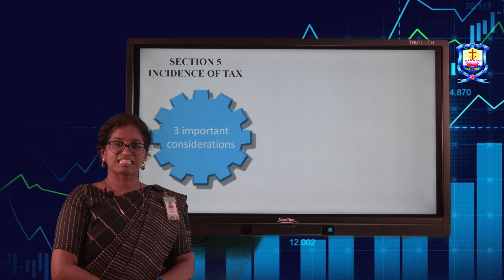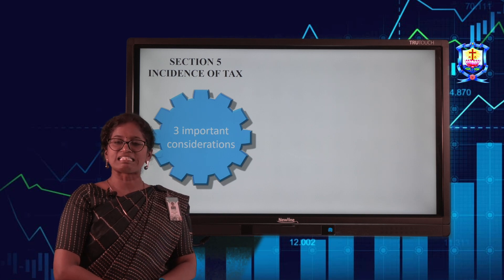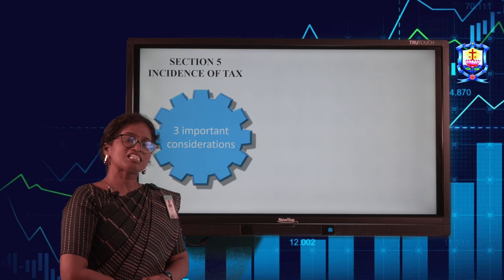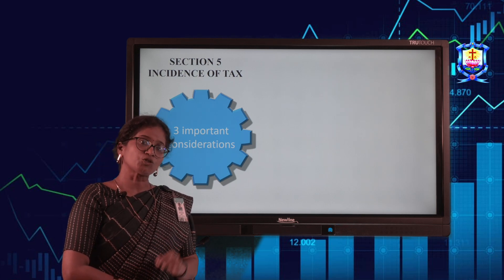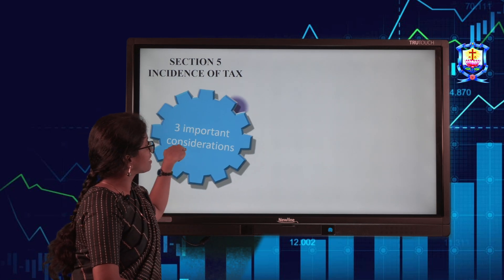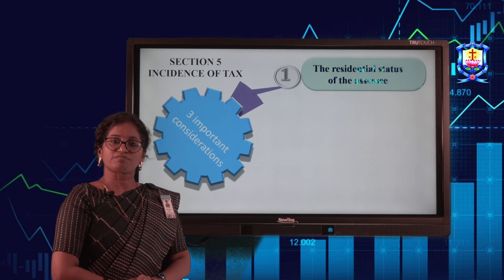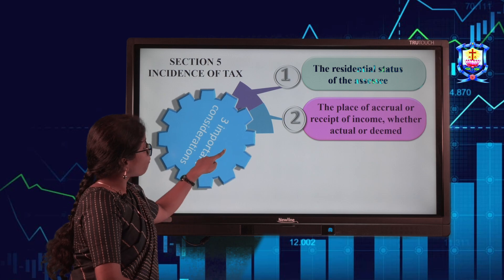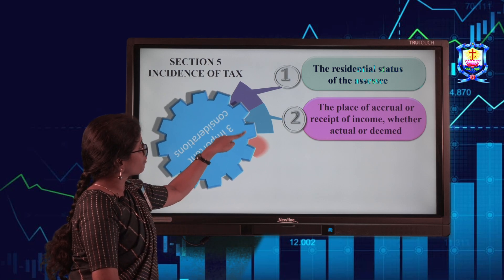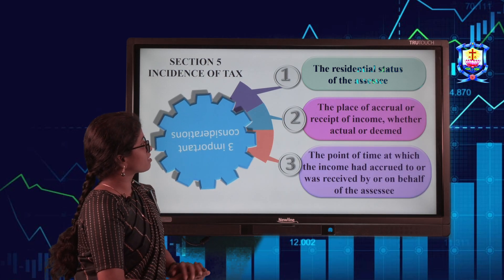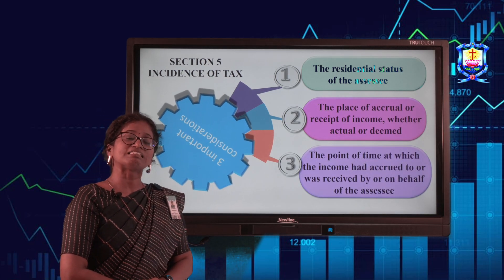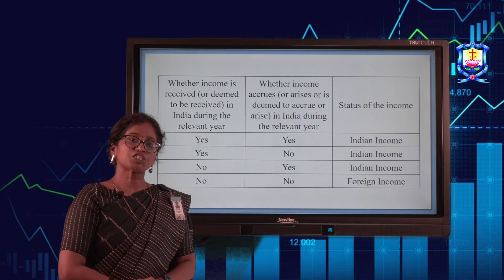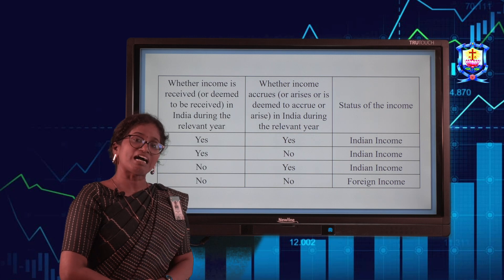Section 5 of the Income Tax Act deals with the scope of total income or incidence of tax. It consists of three important considerations: the residential status of the assessee, the place of accrual, and the time at which the income had accrued.